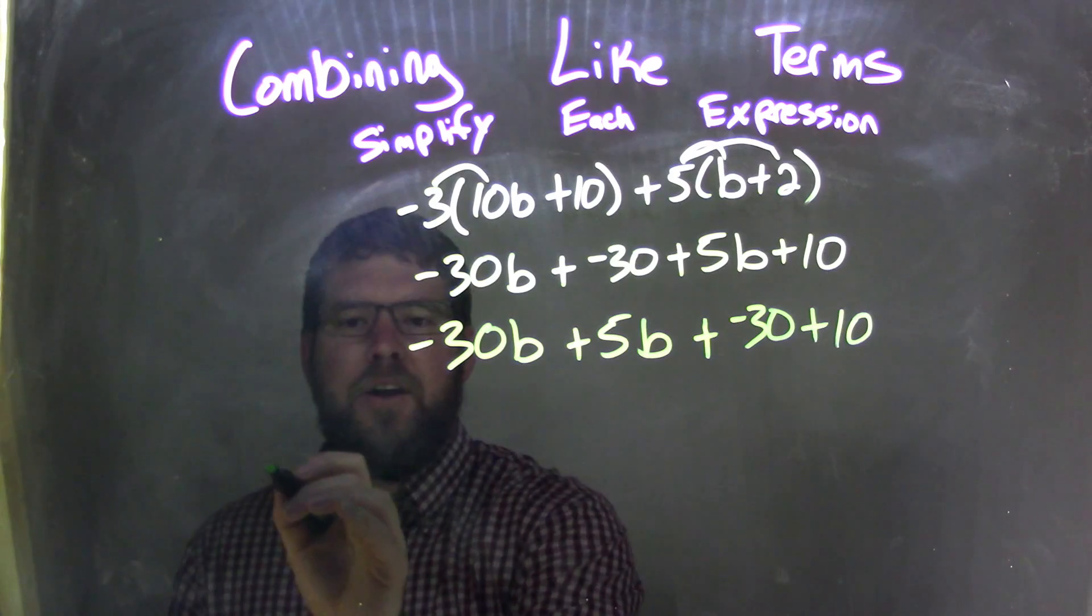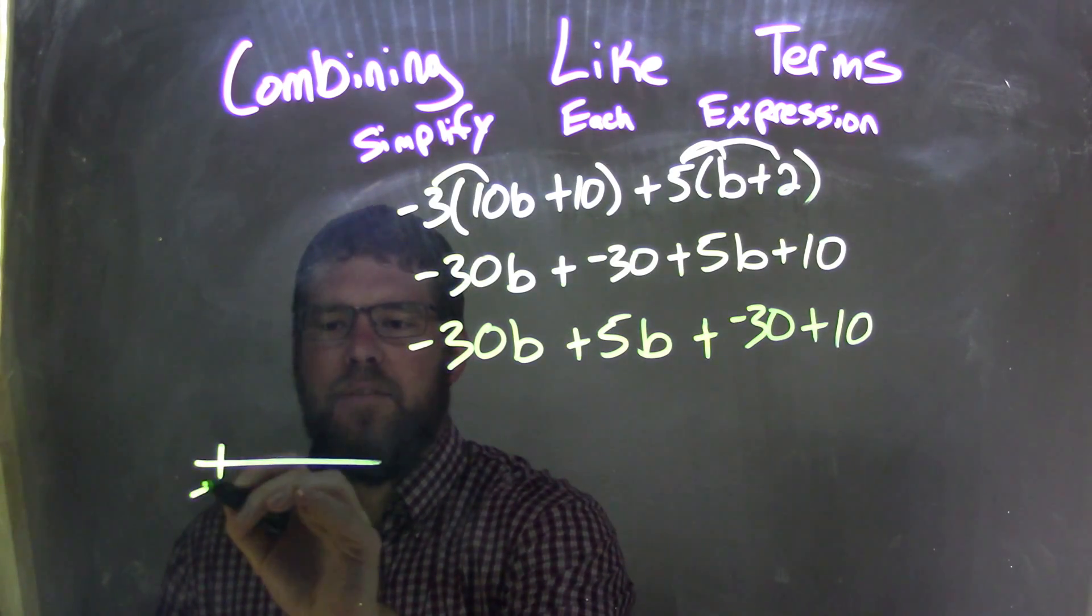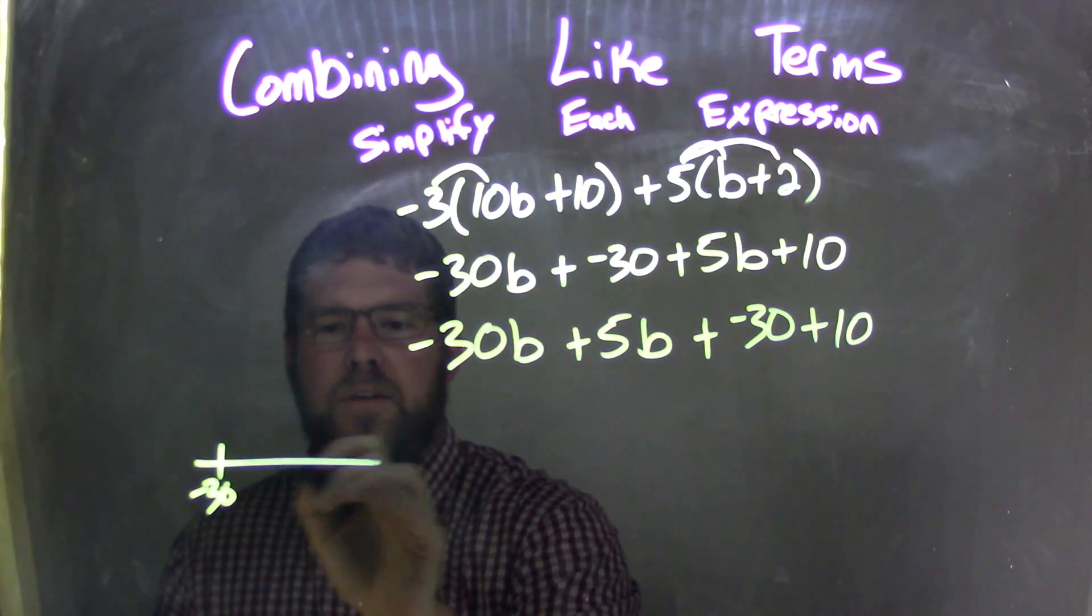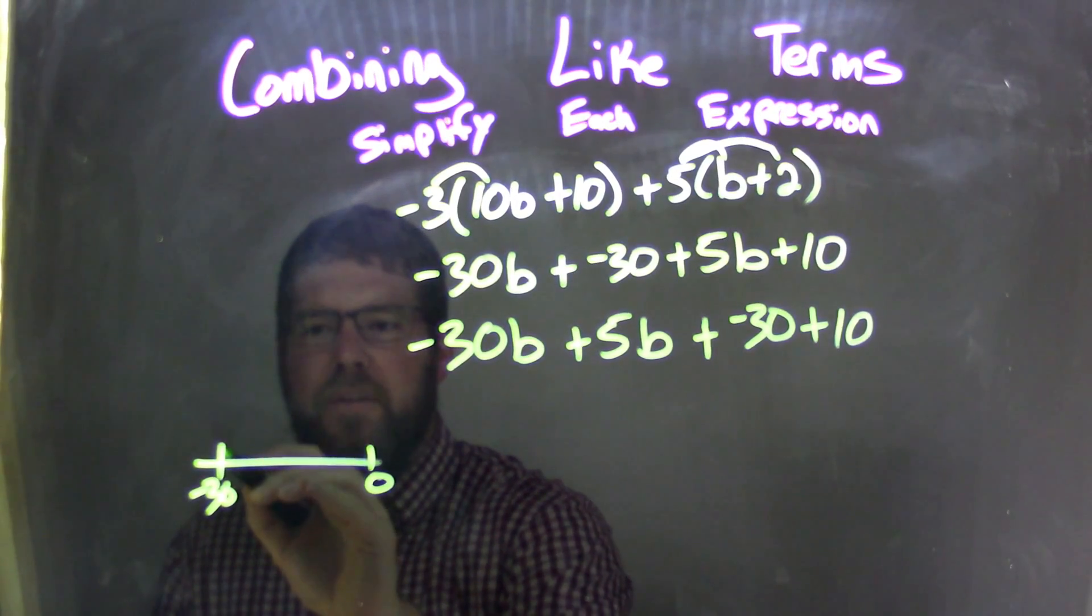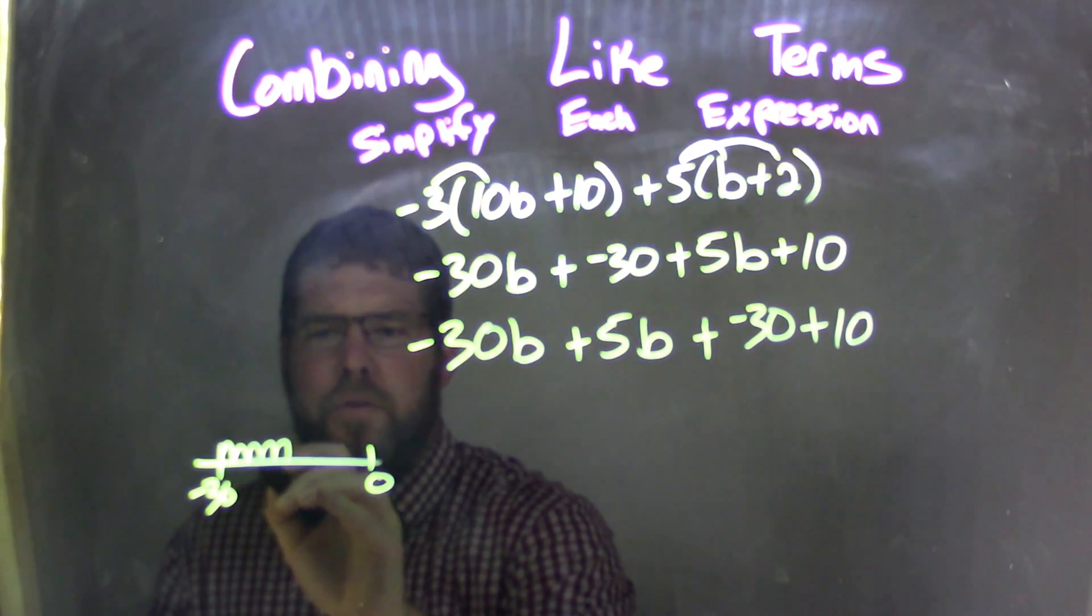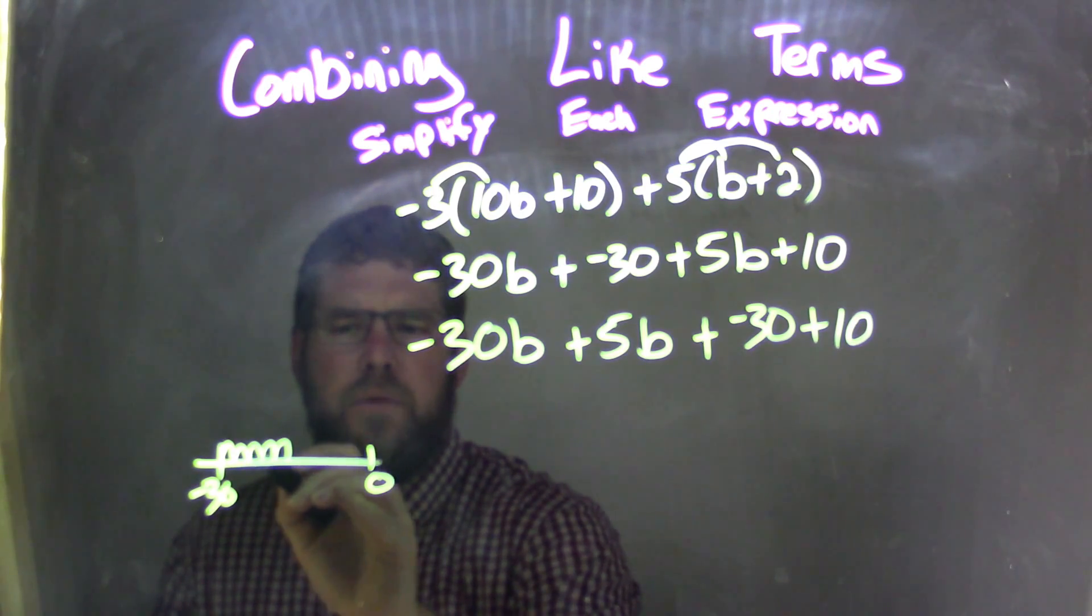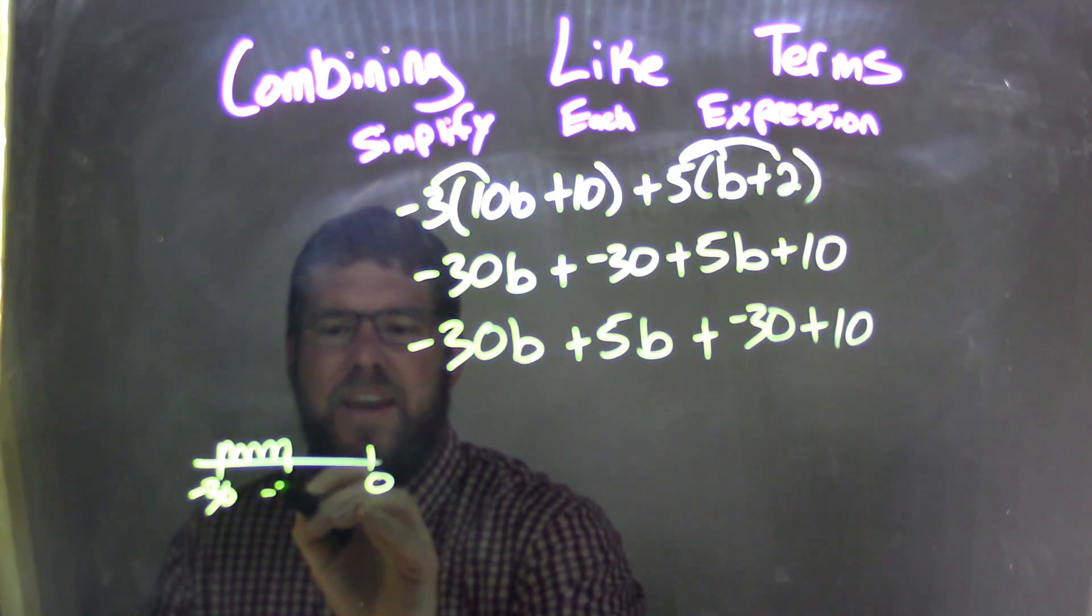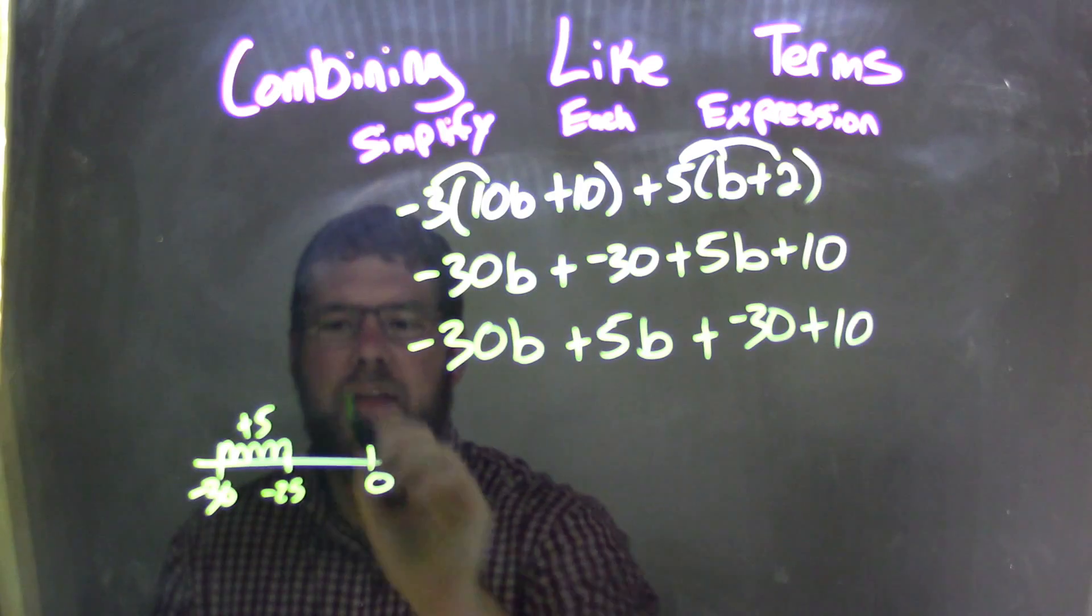Well, if we want to simplify this, let's look at our number line really quickly. We have negative 30 plus 5 units. Here's 0. So 5 units, 1, 2, 3, 4, 5. That's going to be negative 25 if I add 5 units to that.